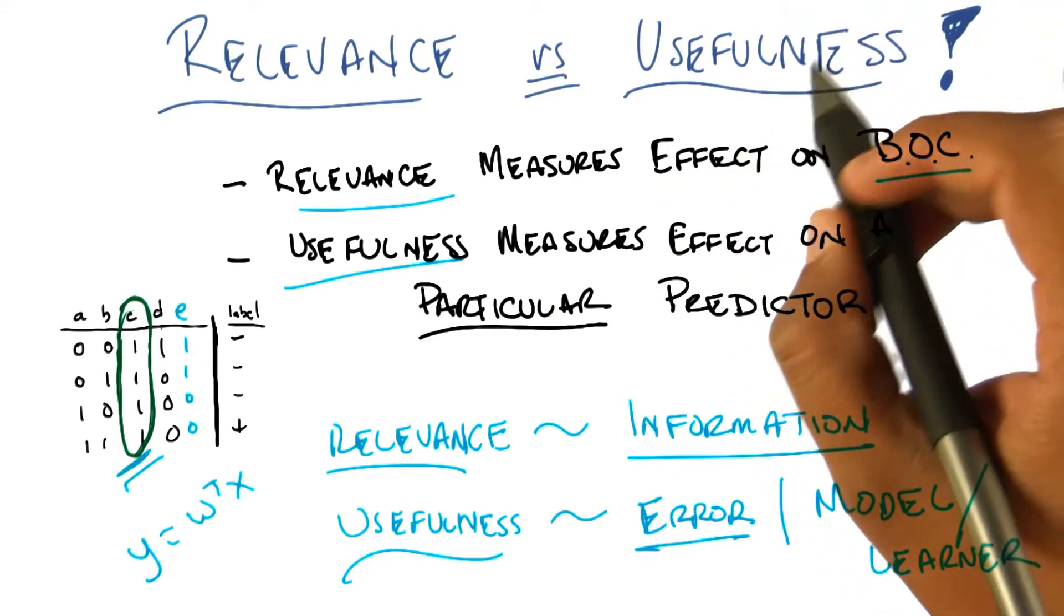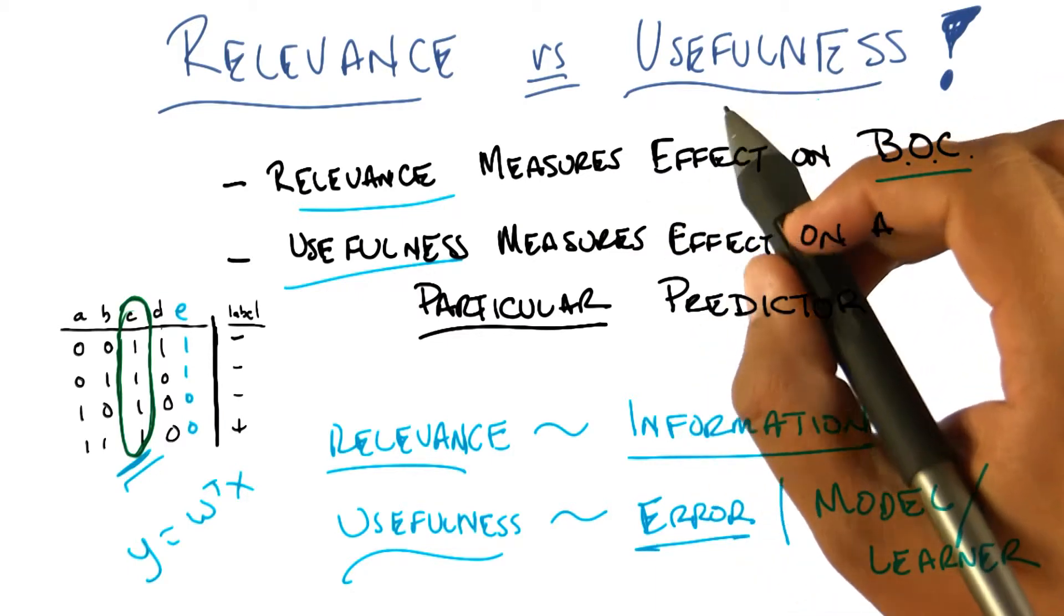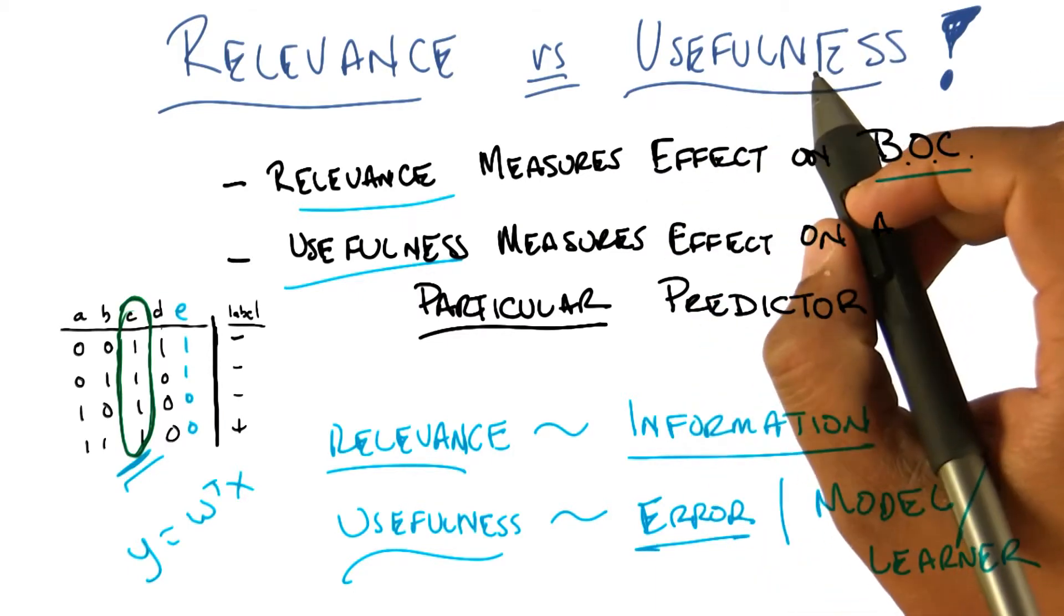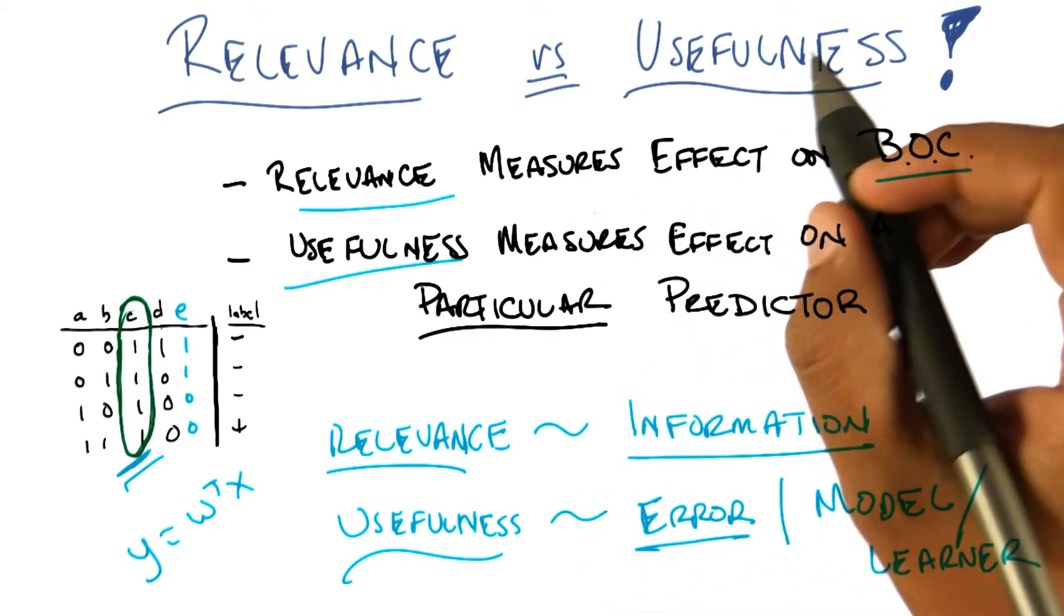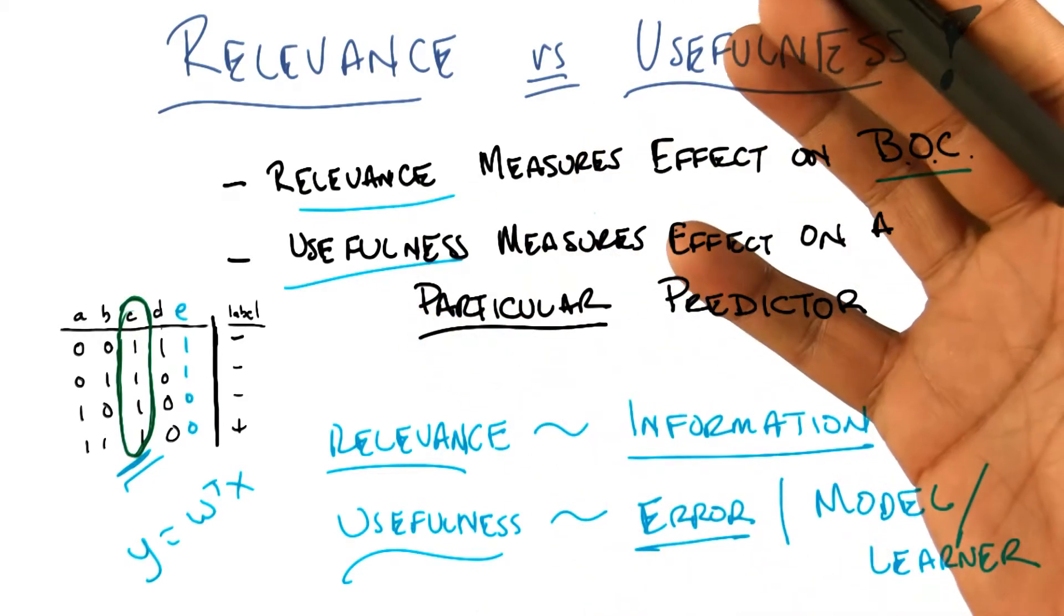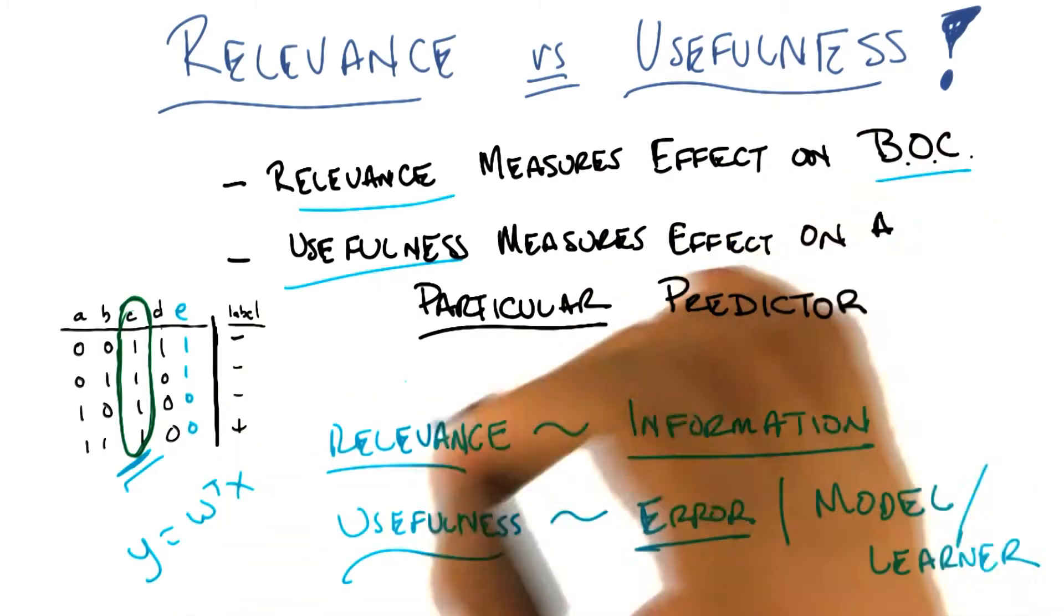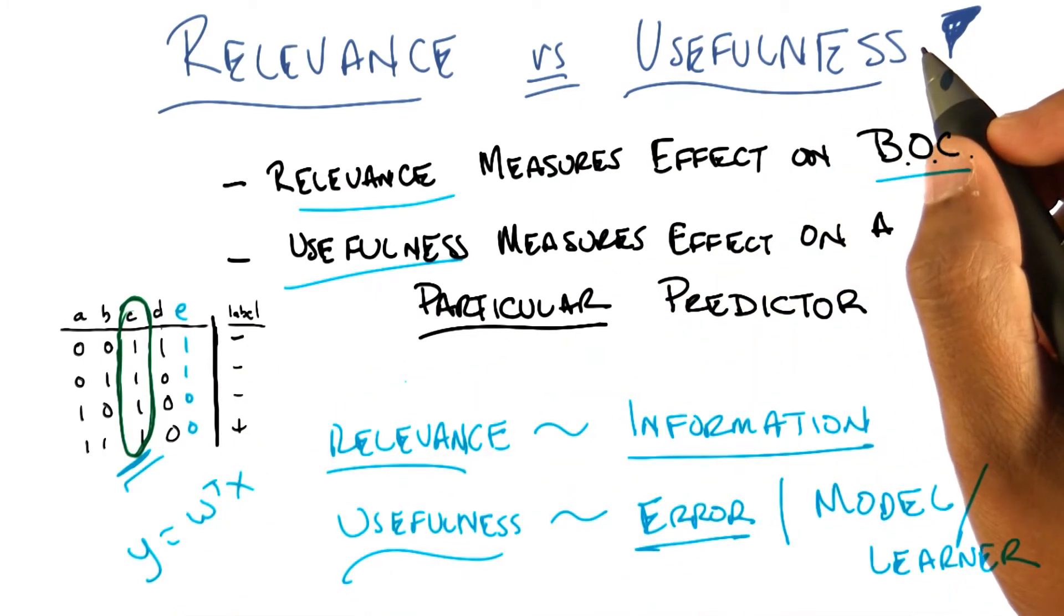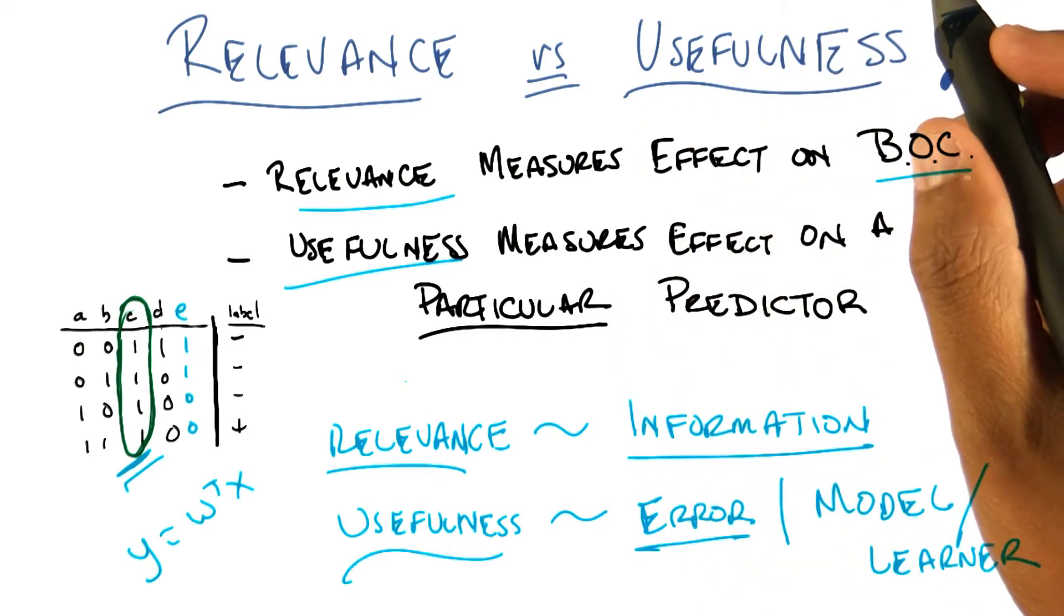All that clustering that we did before, like with k-means and EM, you could think of those as a kind of feature transformation algorithm, which is what we'll be talking about next, where you've taken a bunch of features and you've converted them into something simple like a label. And whether that label is a good label or a bad label depends entirely upon whether you can then do some kind of classification or regression problem later. The label in this case meaning the cluster name.